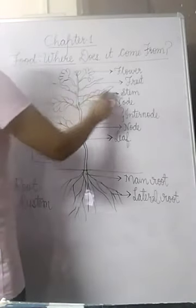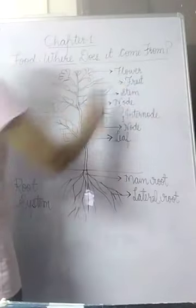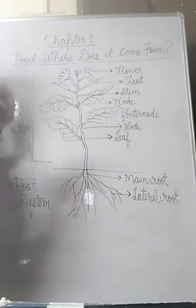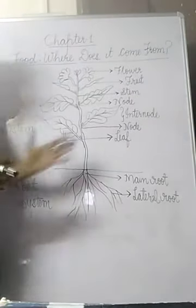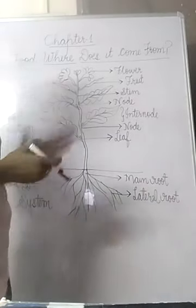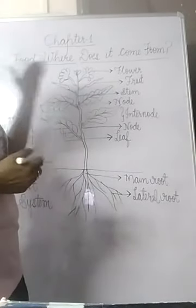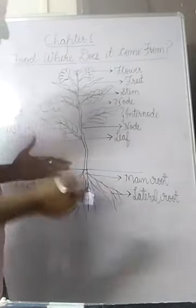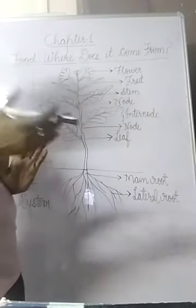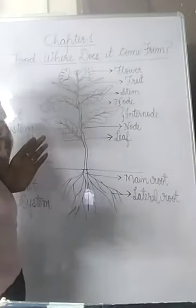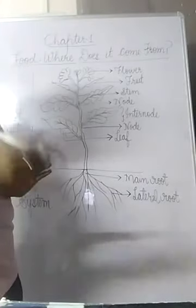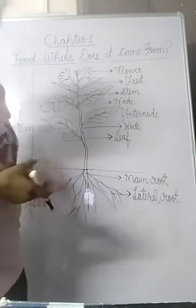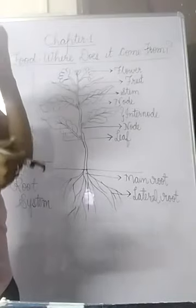The shoot system includes stem, fruit, and flower. These are the different parts of a plant. We have discussed different parts of plants because in a plant there are many parts which are edible. In some plants, root is edible. For example, in case of radish and carrot, we eat the root. So root is the edible part in carrot and radish.